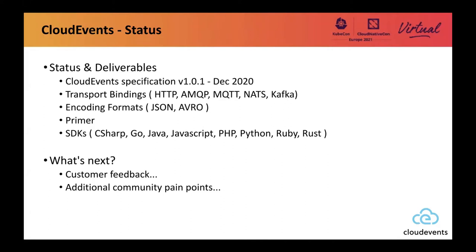We're going to go into a deep dive. Just so you understand what the deliverables were: the specification itself, the transport bindings, the encoding formats, a primer to give you guidance on why we did what we did and how to use the spec, and a whole bunch of SDKs to help you get started with cloud events. In terms of what's coming up next for the cloud event spec itself, to be honest, not a whole lot. We're doing some minor bug fixes, but for the most part we're finding the spec is pretty much okay, and we're just waiting for more community feedback.